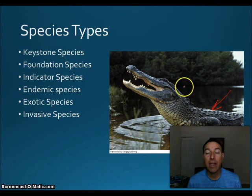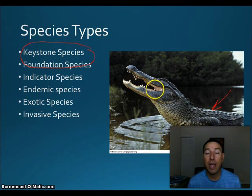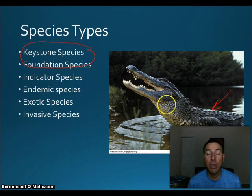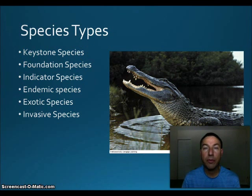As I said before, alligators can be both — sometimes a species can be two of these types. An alligator is both a keystone and a foundation species because not only does it change its habitat like a foundation species, but if it goes away, its habitat totally changes. I hope that was helpful in learning about the basics of ecology and some of the species types you'll need to know about in AP Environmental Science.